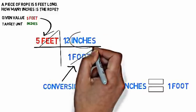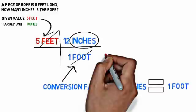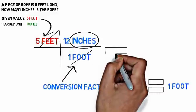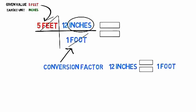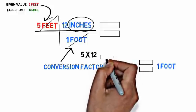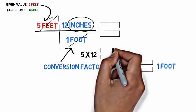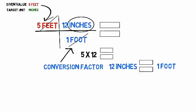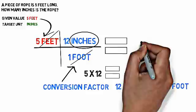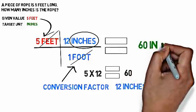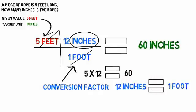This leaves us with just inches. Now we solve it by multiplying the values: five times 12 over one, which equals 60. So the rope is 60 inches long.